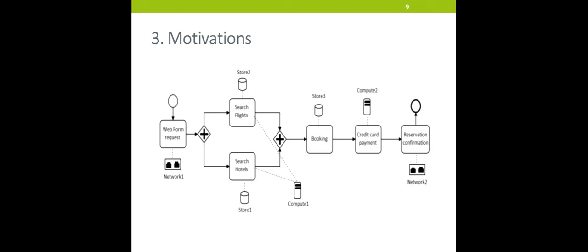We move now to our motivations. Our motivating example is the travel booking composite service, which is constituted of six component services: the web form request service, the search flight, search hotel, booking, credit card payment, and reservation confirmation service. These component services require cloud resources in order to execute. The web form request requires a network resource. The search flight and search hotel require both a storage and a compute resource. The booking component service requires a storage resource. The credit card payment component service requires a compute resource. And the reservation confirmation component service requires a network resource.